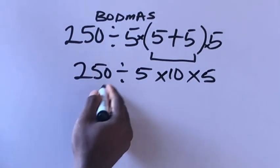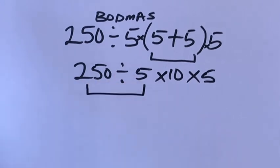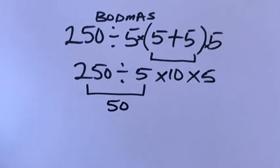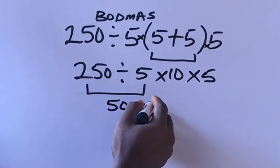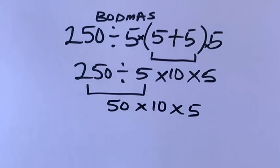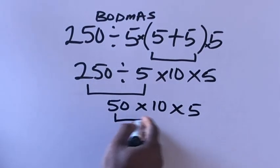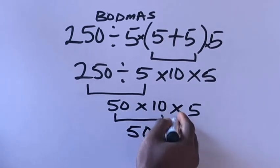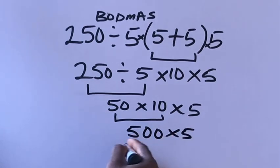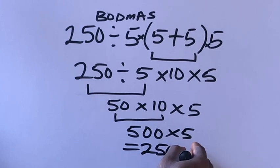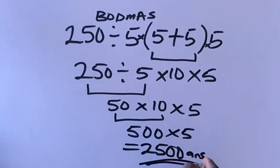So we have to divide this one. 250 divided by 5 will give us 50, 50 times 10 times 5. What we have left is 50 times 10 times 5. This times this will give us 500. 500 times this 5 will give us 2500. This is our final answer.